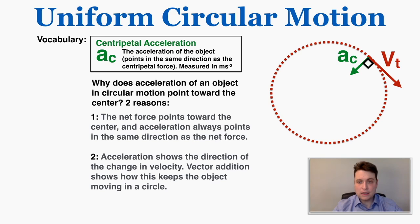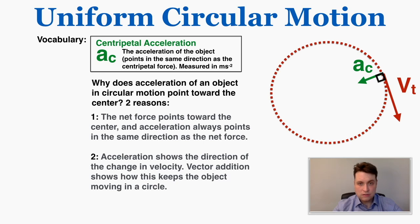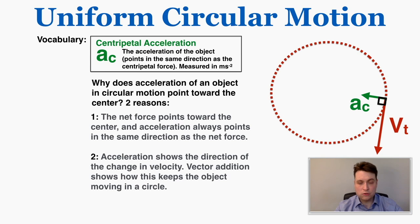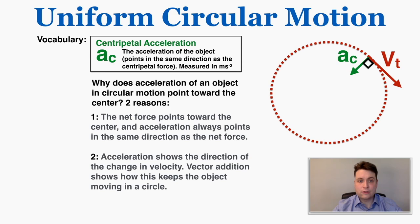A second way is to watch the vector animation above — because acceleration is the change in velocity, it causes velocity to always change toward the center of the circle, so the velocity continues to turn around, maintaining circular motion. If acceleration pointed in the same direction as velocity, the object would just continue along a straight-line path.